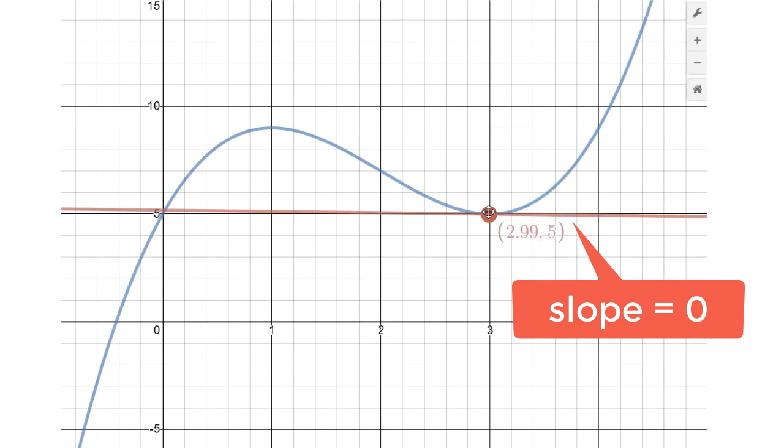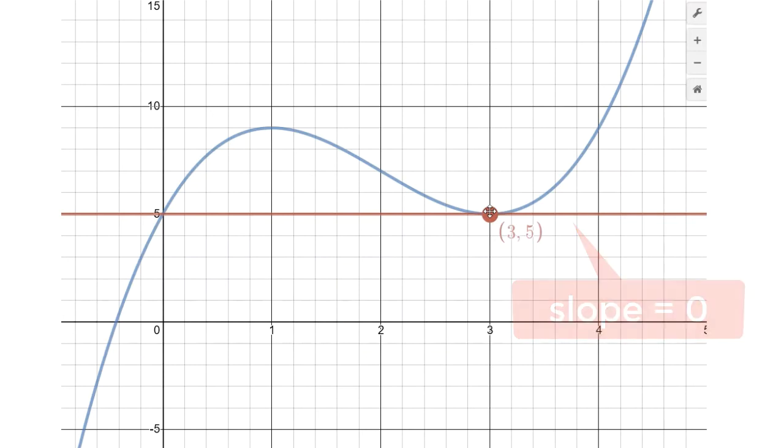So what we're going to explore is algebraically how to find these points of interest: this local minimum at three five and this local maximum at one nine.